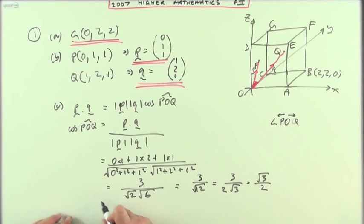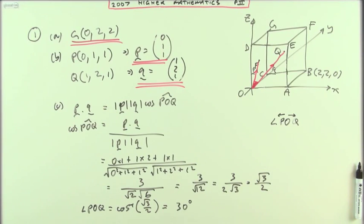Straight away I can see this thing. I'll put it down this way: POQ is going to be inverse cos of root three upon two, and without a single glance at my calculator that means it's going to be exactly 30 degrees. Well, there was eight marks fairly painlessly.